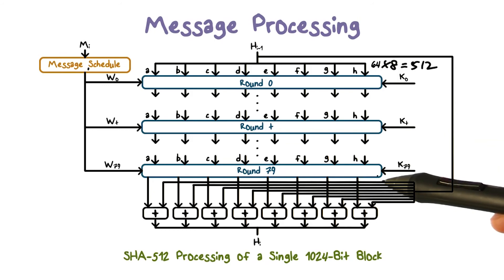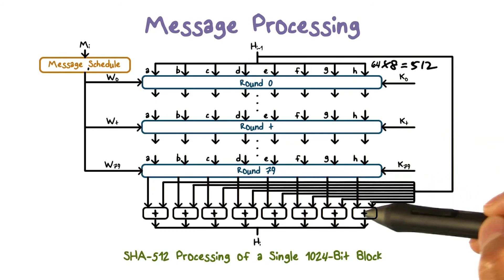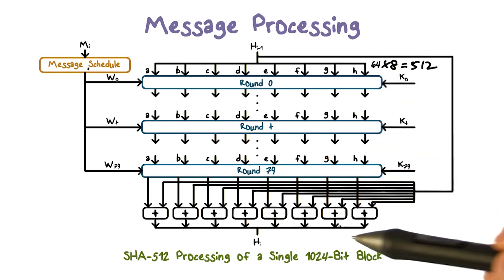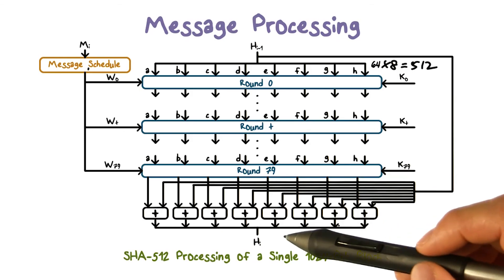The output of the last round is added to the input to the first round. And the result will be used in the processing of the next message block.